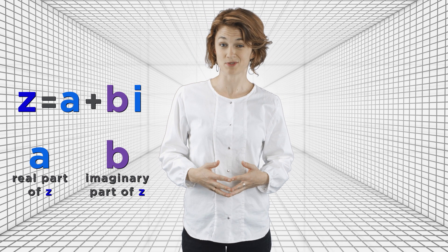When we write complex numbers, we separate out the parts that contain the imaginary unit from the parts that don't. If we call a complex variable z, we can write it in two parts, z equals a plus bi, where a and b are real numbers. Even though both a and b are real numbers, we call a the real part of z and b the imaginary part of z, since it's multiplied by i, the imaginary unit.